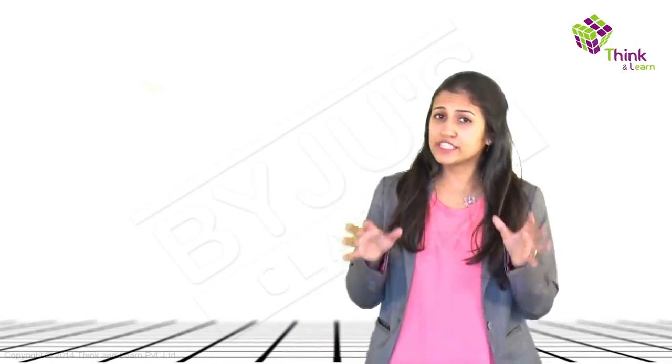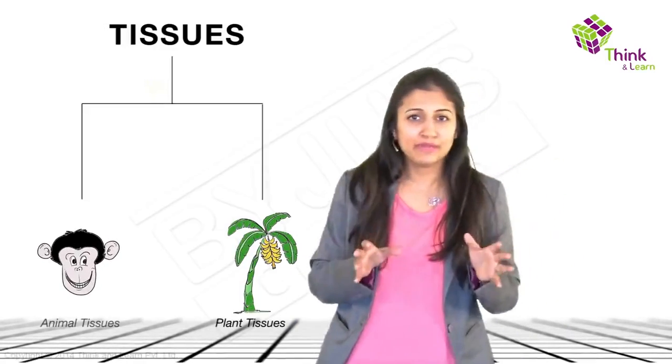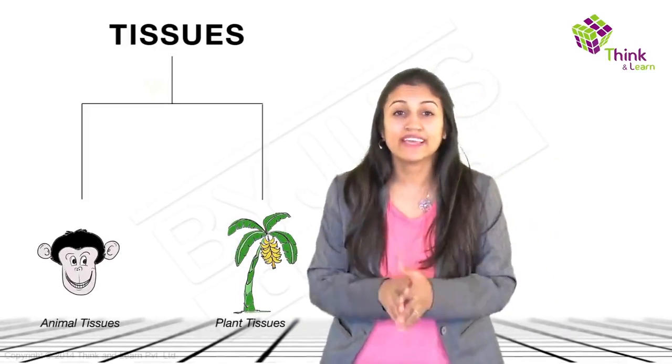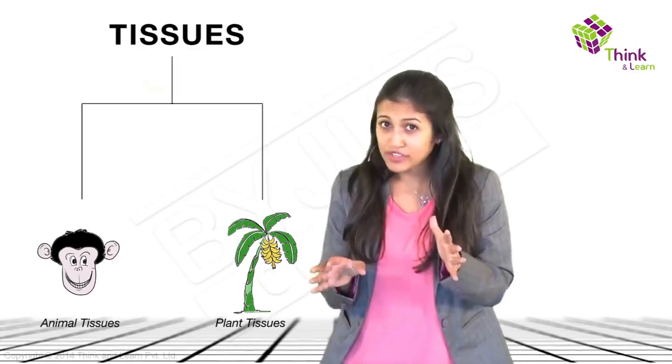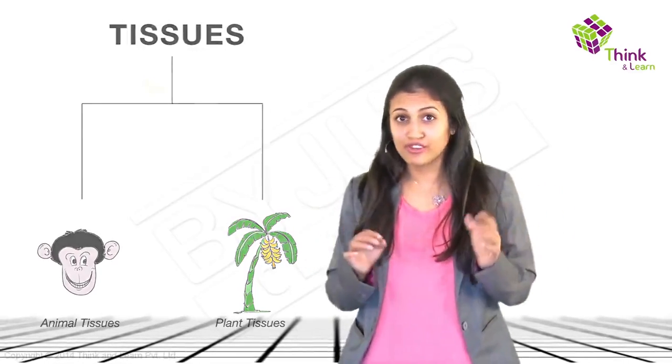Now, the broadest classification of tissues happen based on whether it's a plant that we're talking about here or an animal. Because it happens that only they have them. Although completely different types with very different structures and very different functions.